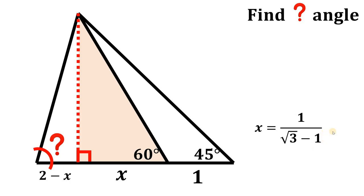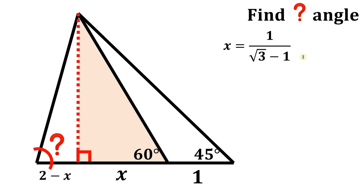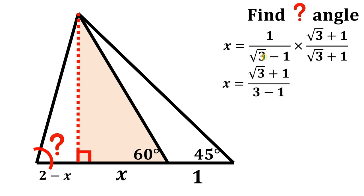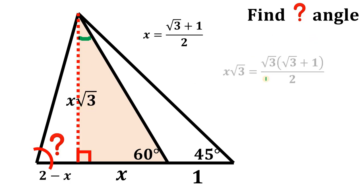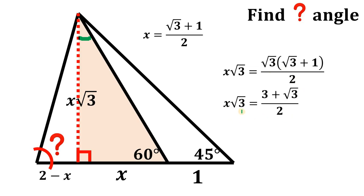But we're not done — let's rationalize this expression. To rationalize, multiply by the conjugate of the denominator: square root of 3 plus 1 over square root of 3 plus 1. We get the result as square root of 3 plus 1 over the denominator, which is 3 minus 1, simply equal to 2. So x equals square root of 3 plus 1 over 2. Now, x times square root of 3 equals square root of 3 times the value of x, which gives us 3 plus square root of 3 over 2.